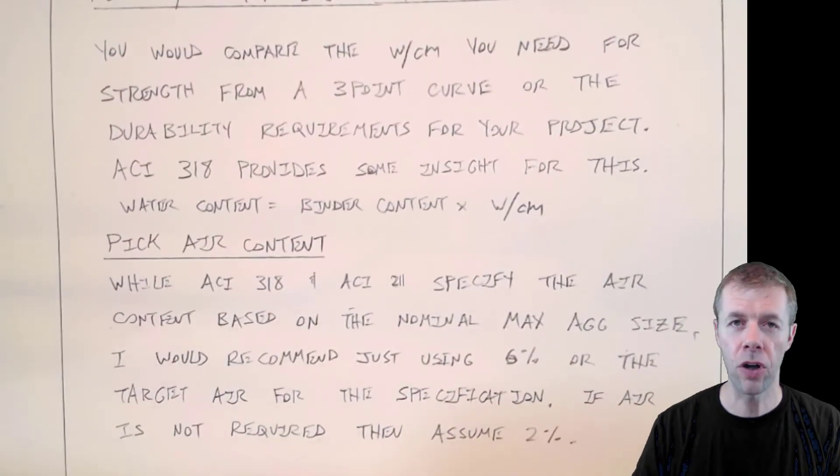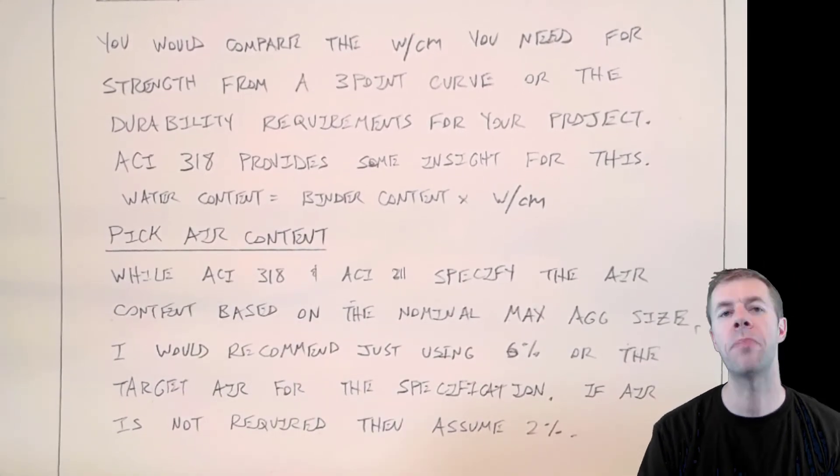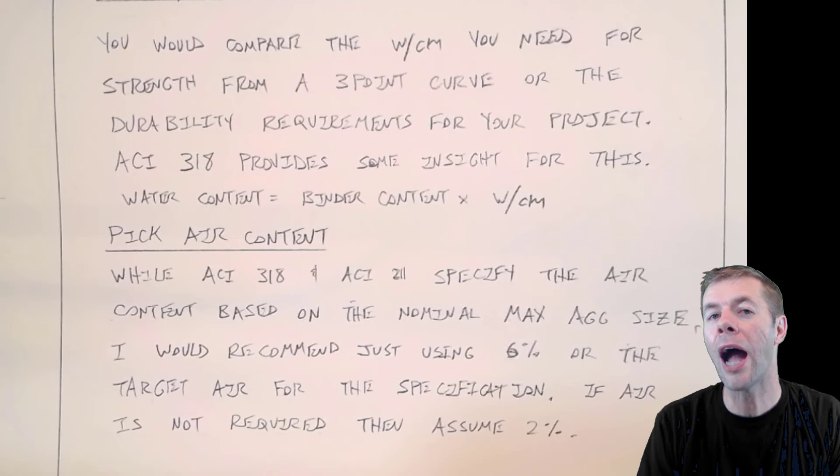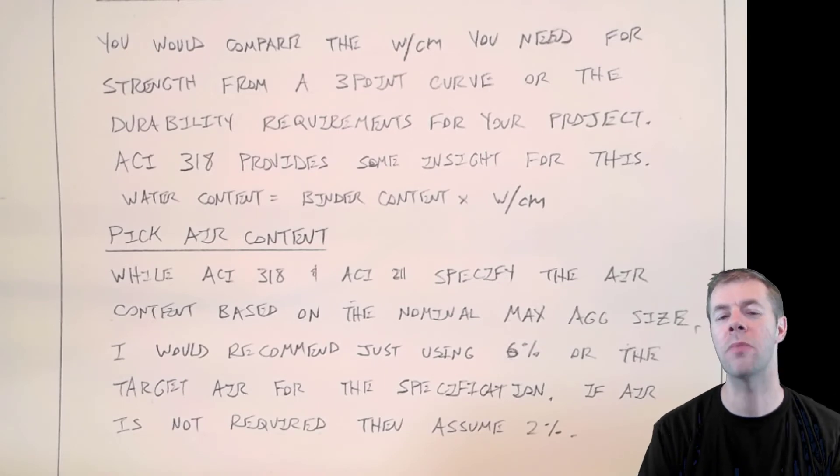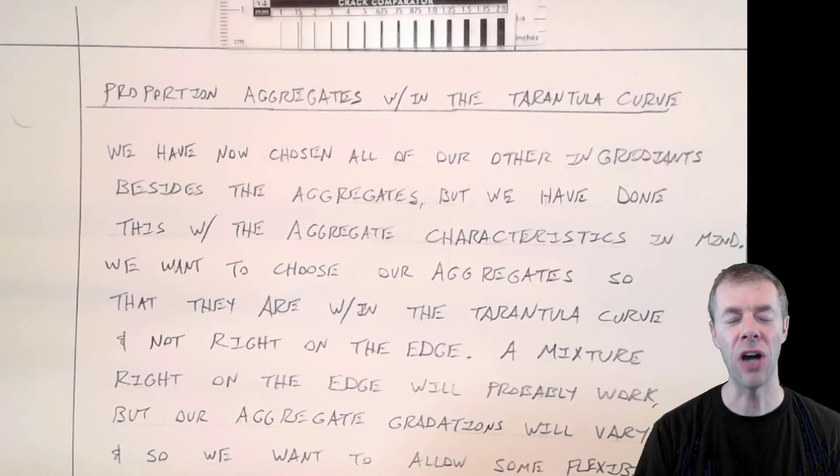The next step is to pick the air content. ACI 318 and 211, they try to specify the air content based on the nominal maximum aggregate size. I would recommend just using, just making it simple, and using something like six percent air as your target air if you're looking for air-entrained concrete. And if you're having non-air-entrained concrete, then I would just assume two percent air in the concrete. Or, if you know better, if you know that you need more air content for some reason, then use whatever you know.